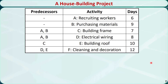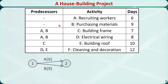With these rules in mind, let's see how to create a project network using available information. This is a house building project involving six activities. Activity A is recruiting workers — it takes 6 days. Activity B is purchasing construction materials — it takes 9 days. These two activities have no predecessors, so they should be connected with starting node 1. After A and B are completed, we can start activities C and D: building the house frame and installing electric wires, with durations of 7 days and 8 days respectively.